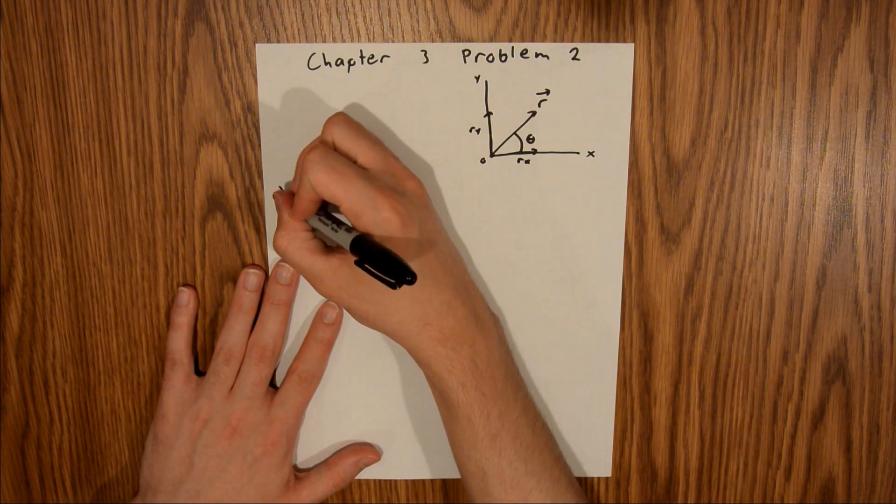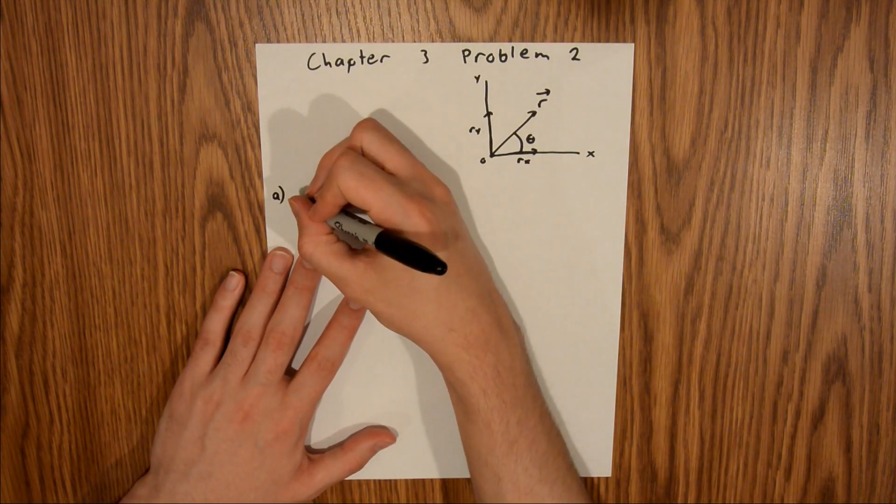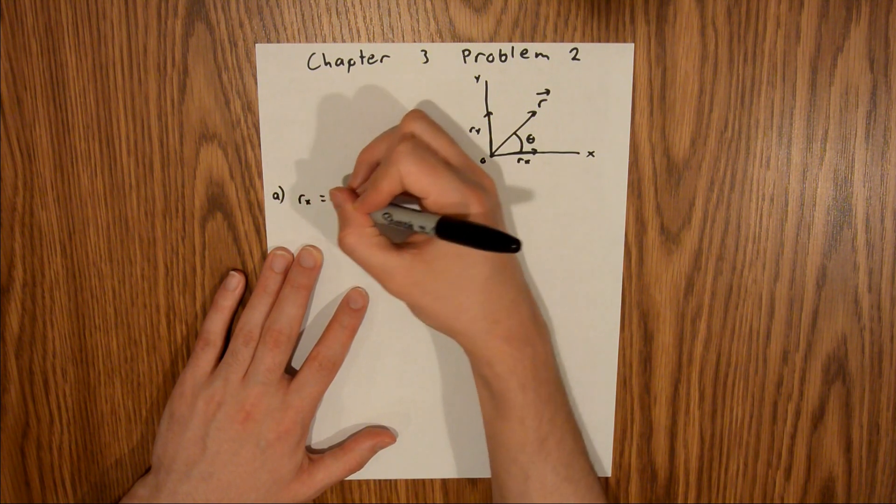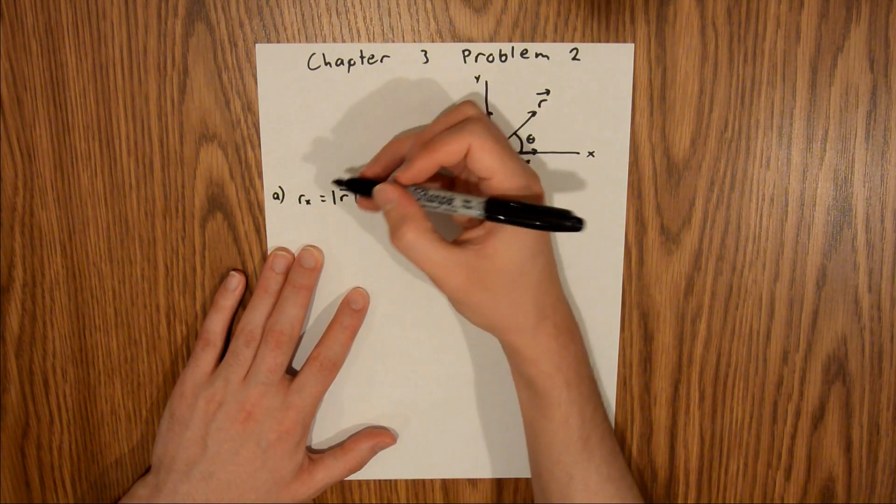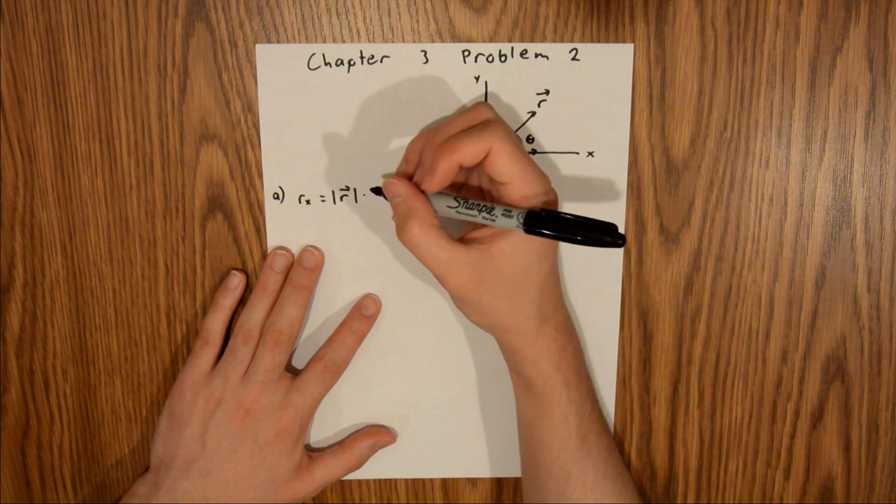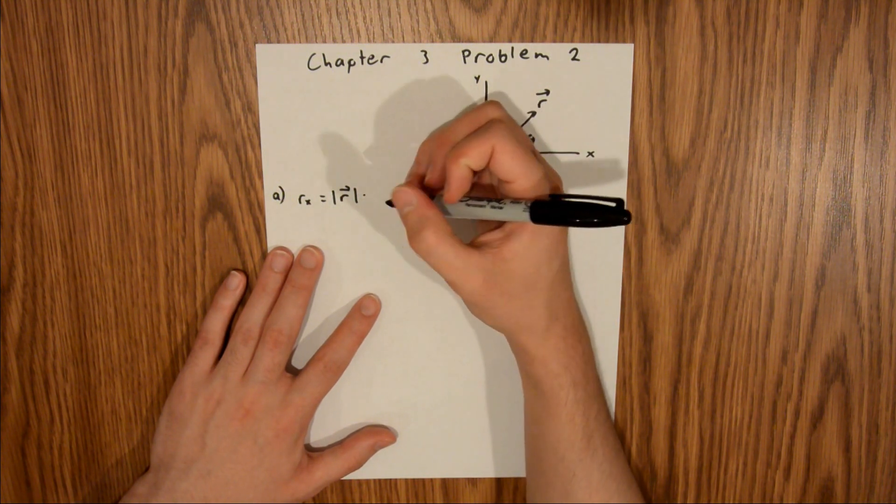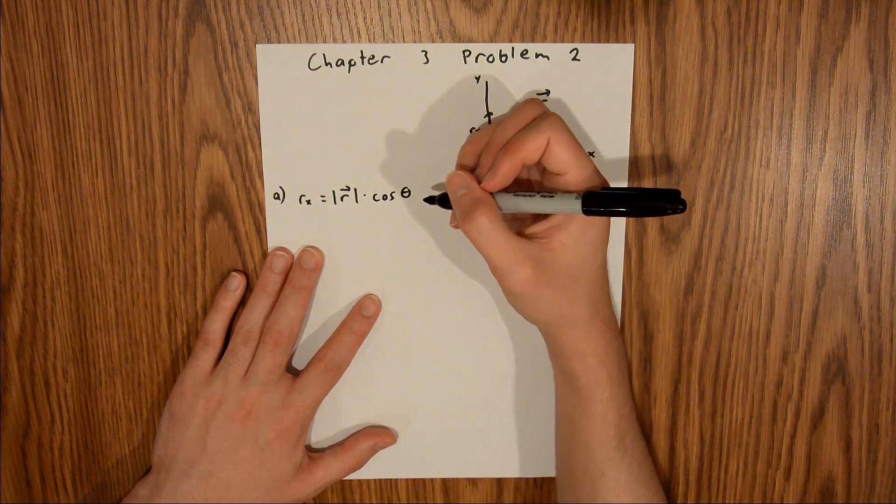And so for Part A, we are looking for the x component. The x component of a vector is equal to the magnitude of that vector—these bars just mean the magnitude of that vector—and that is times the cosine of the angle.